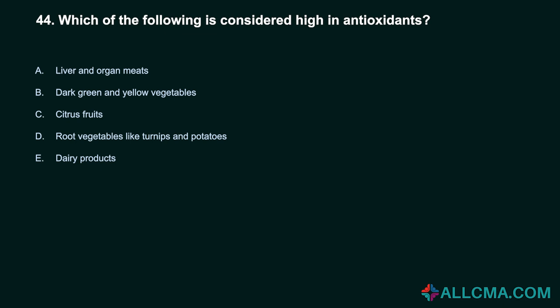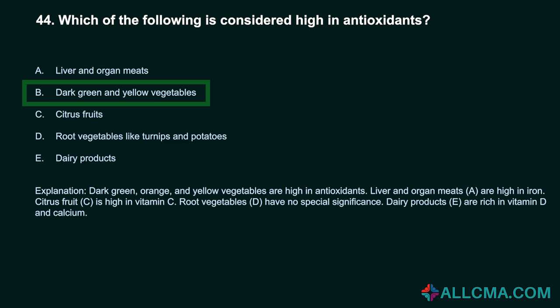Question 44: Which of the following is considered high in antioxidants? a) liver and organ meats, b) dark green and yellow vegetables, c) citrus fruits, d) root vegetables like turnips and potatoes, e) dairy products. Correct answer: B, dark green and yellow vegetables. Dark green, orange, and yellow vegetables are high in antioxidants. Liver and organ meats are high in iron. Citrus fruit is high in vitamin C. Root vegetables have no special significance. Dairy products are rich in vitamin D and calcium.